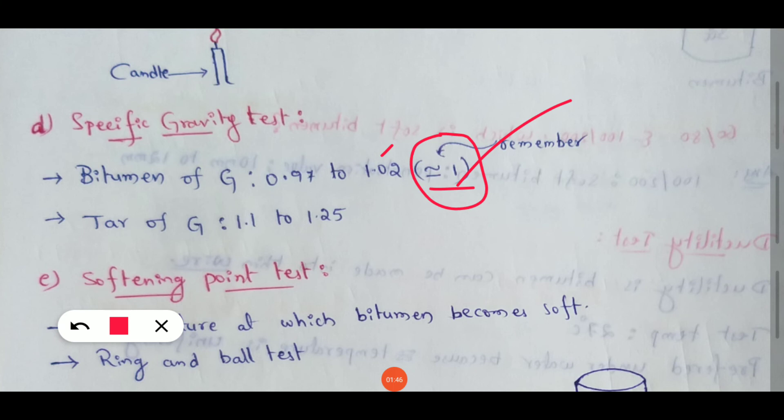At the same time, another specific gravity value range is 1.1 to 1.25. So this range is 1.1 to 1.25.